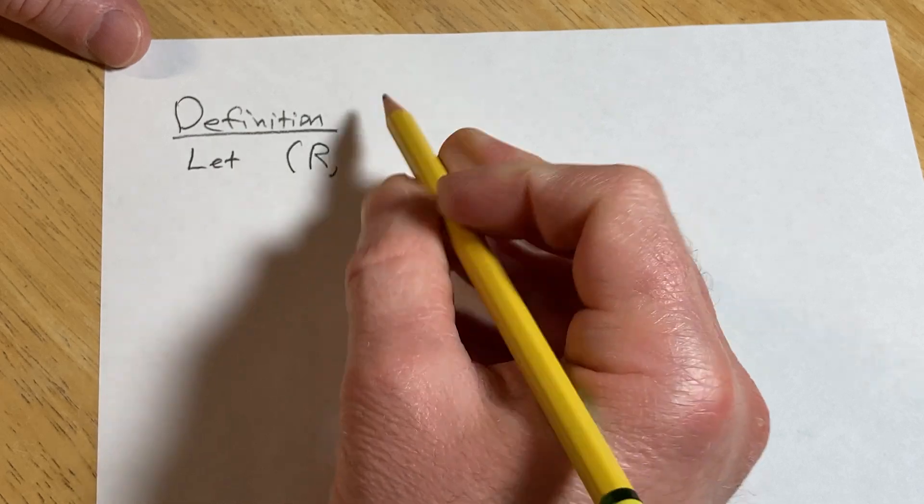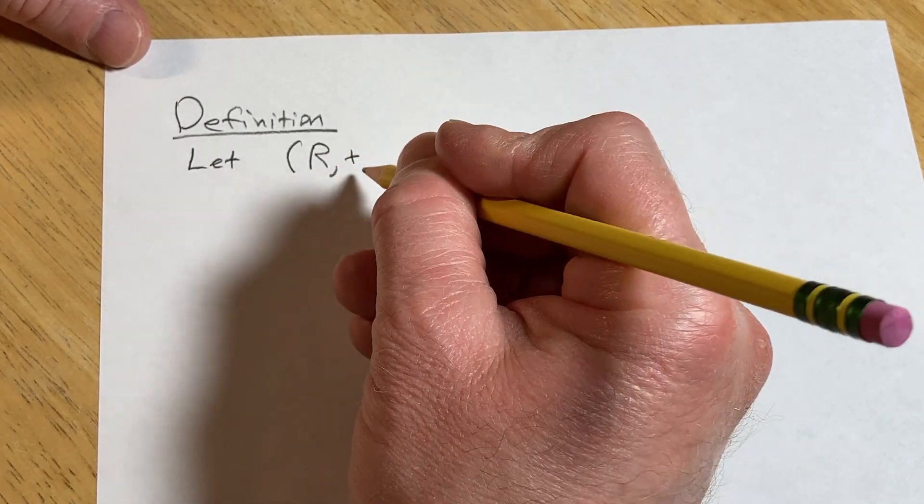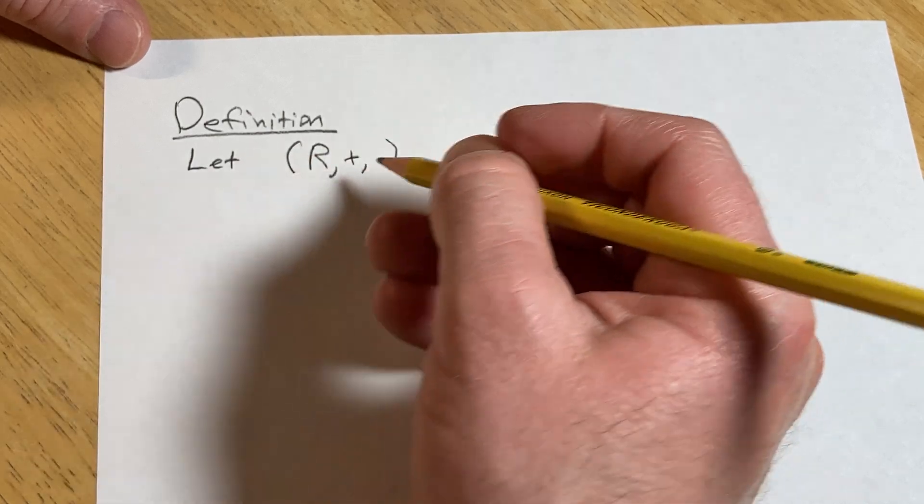Let R be a ring. Let's define the operations here. Let's do addition and just regular multiplication. This is what we're used to.